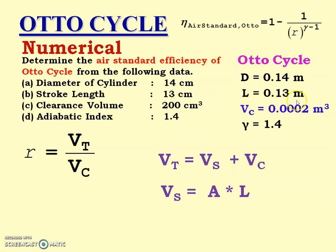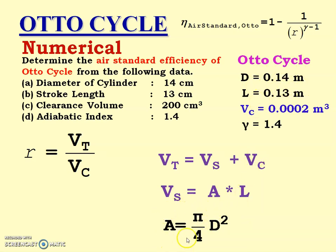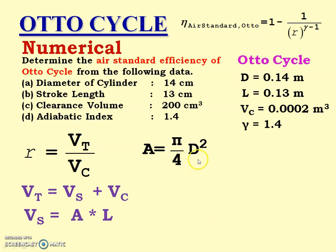The area is not given, so we calculate it using: area = (pi/4) × d². Diameter is given as 0.14 m. So first we calculate the area, then Vs, then Vt, then R, and finally the air standard efficiency of the Otto cycle. Let us calculate one by one. Area = (pi/4) × d², putting in the value of diameter.